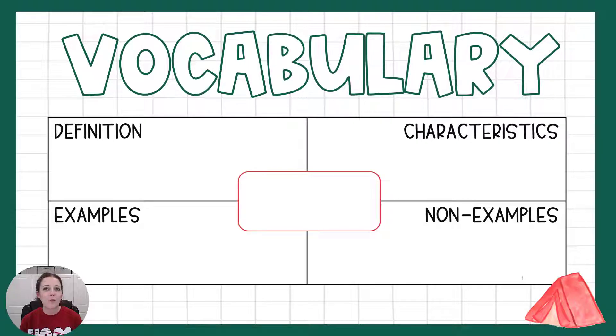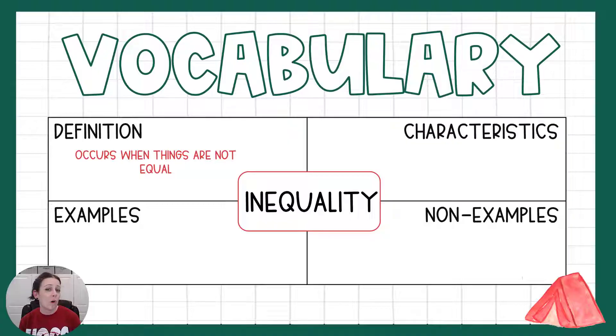So let's start with our vocabulary. What in the world is an inequality? Well, we know that those EQU words mean equal, and if you put the prefix IN in front of it, what do you think that means? It means not equal. So an inequality happens when things are not equal.